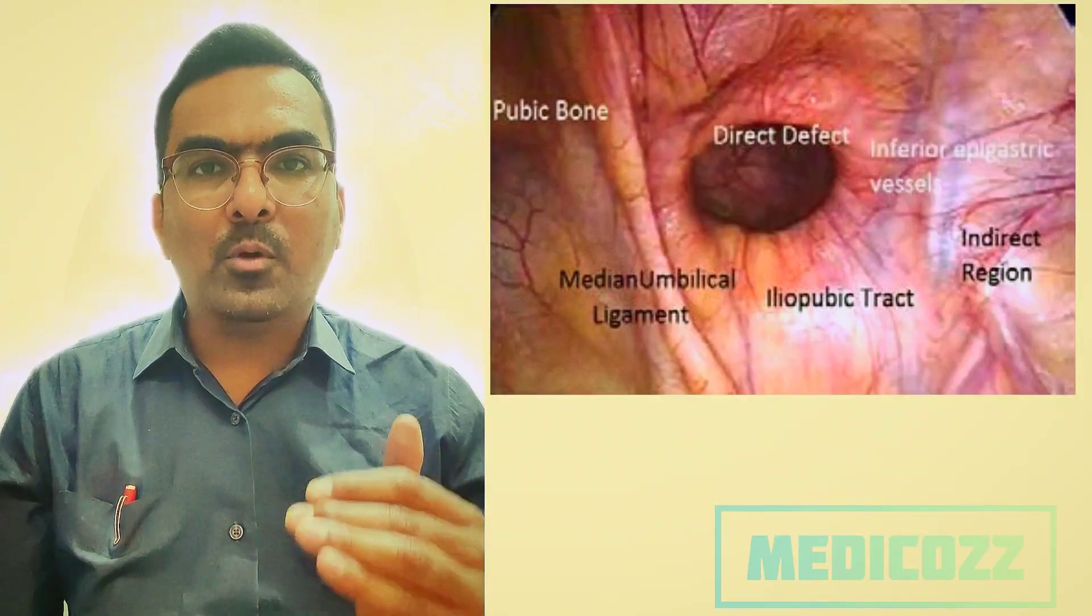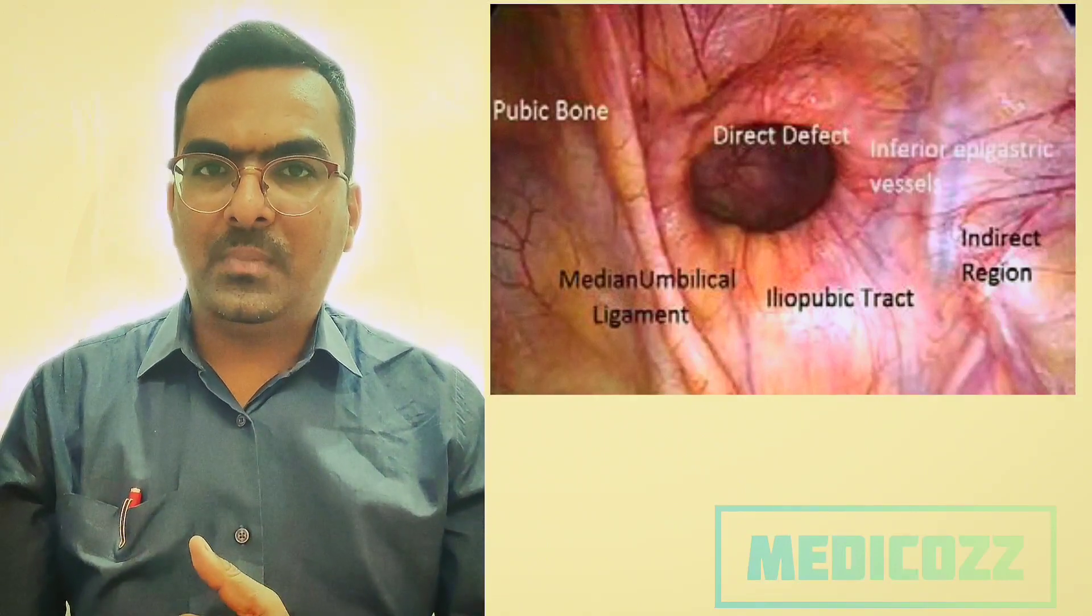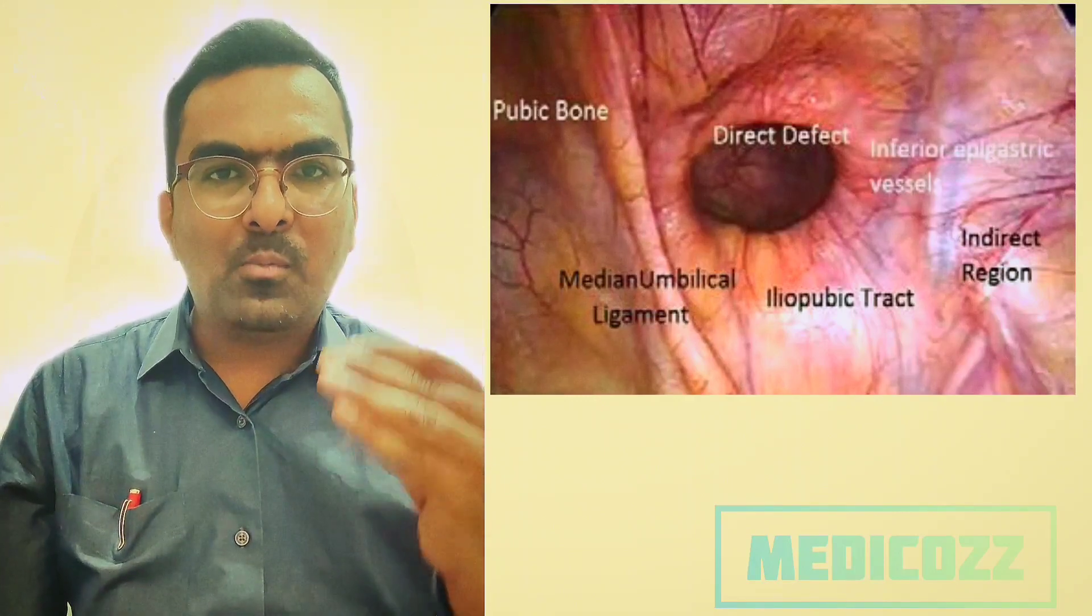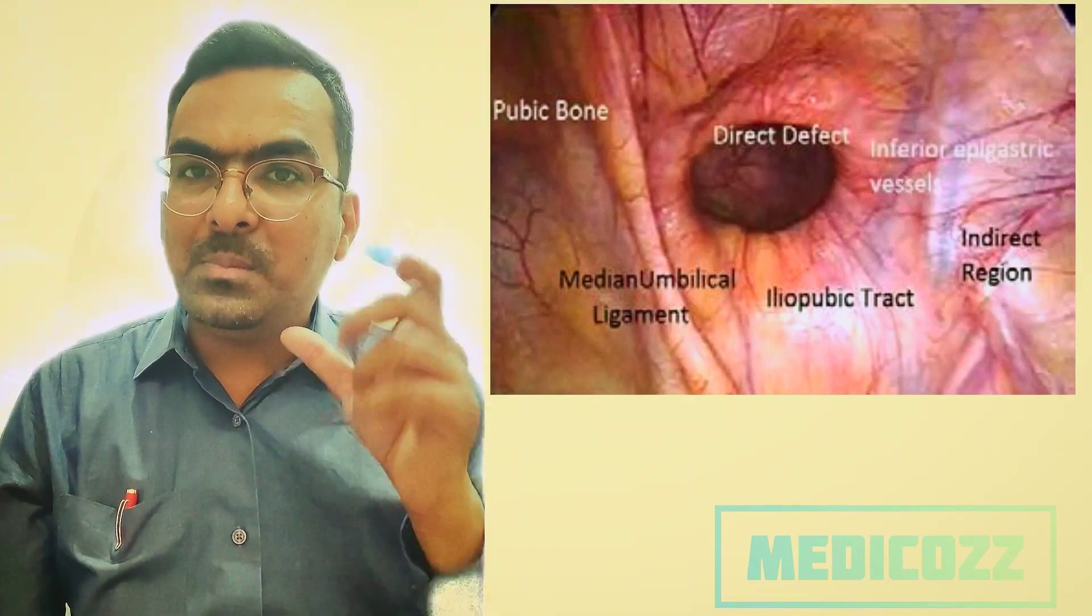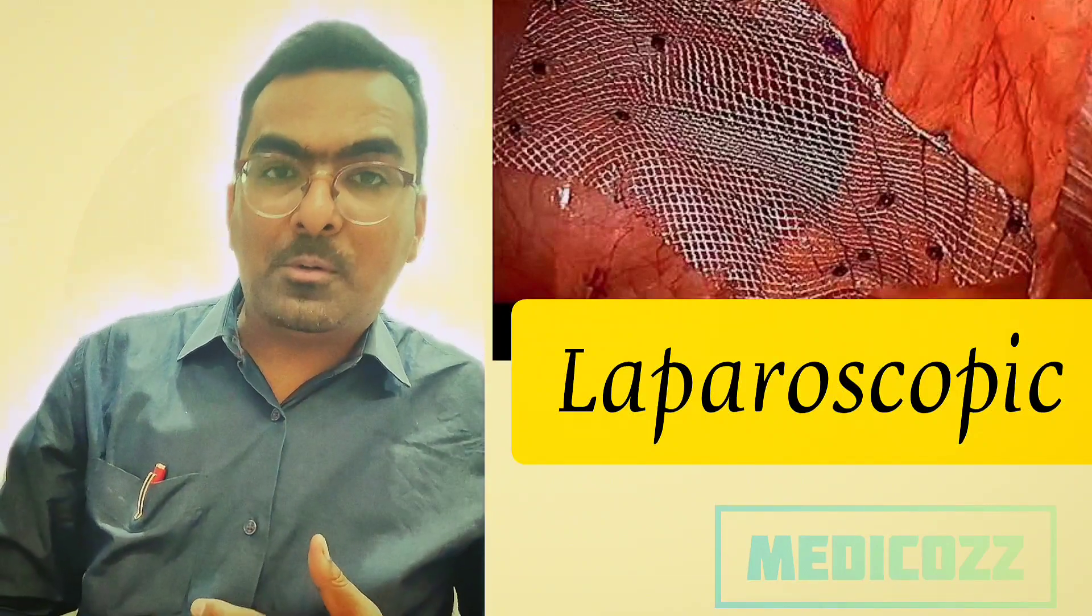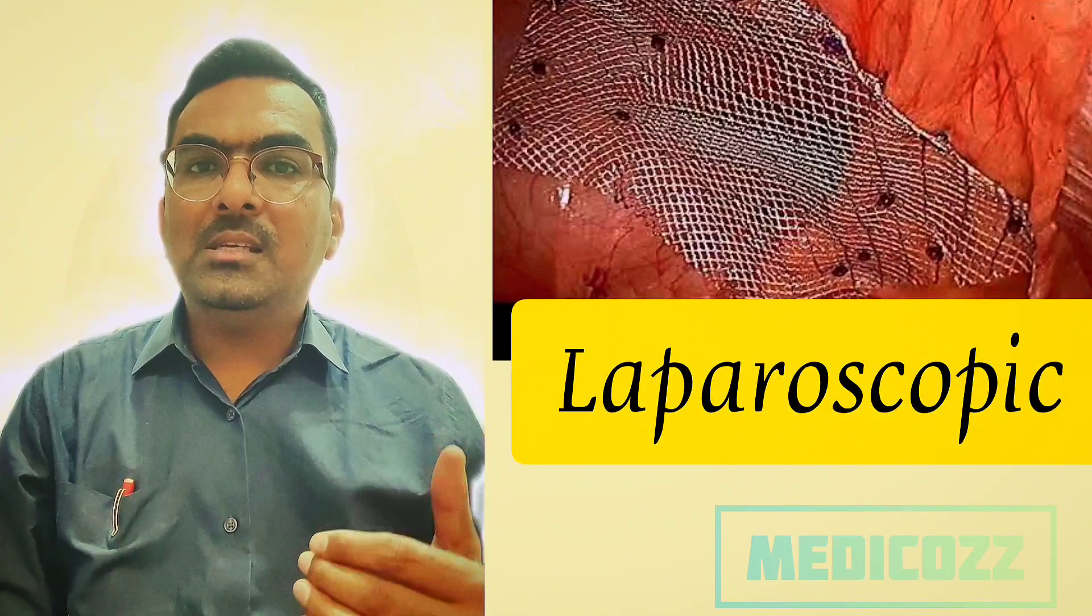This technique addresses the potential spaces where hernias can occur, reducing the risk of recurrence. This contrasts with the traditional open repair method which uses smaller meshes focused on specific defects. A 15 to 20 cm mesh is used in laparoscopic repair as it is the posterior repair, whereas a 6 by 10 cm mesh is used in open hernia surgeries because it is anterior repair.